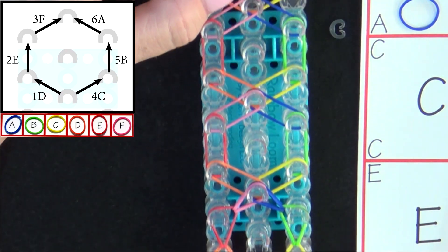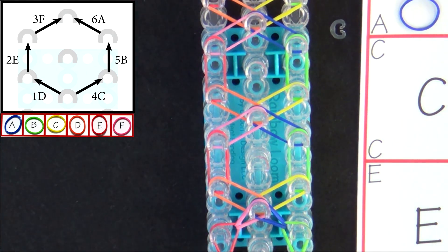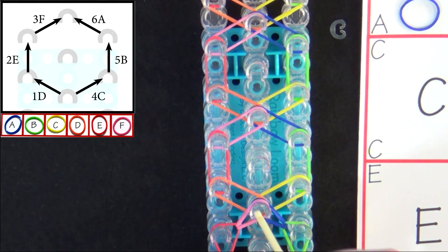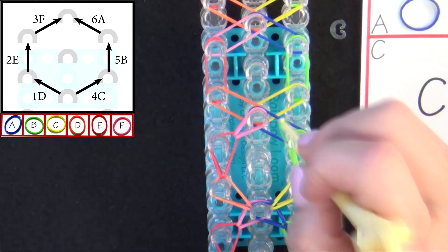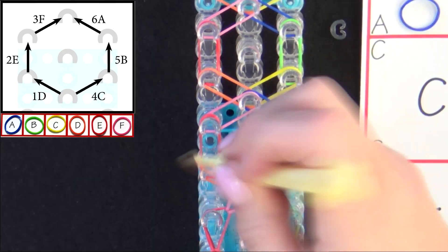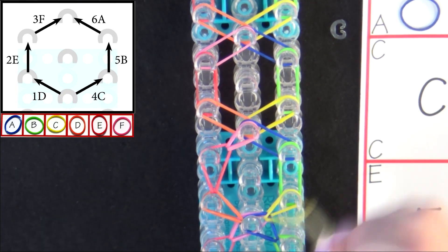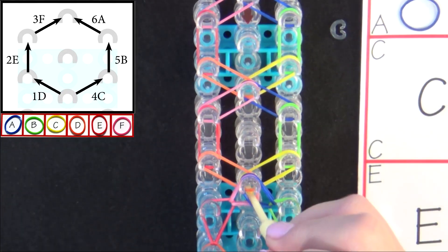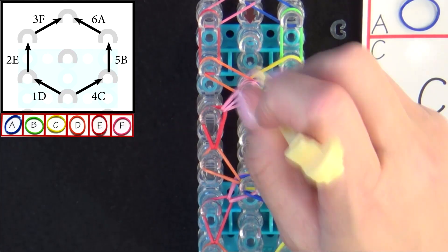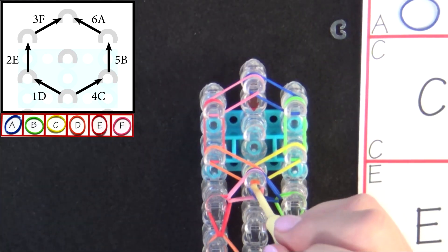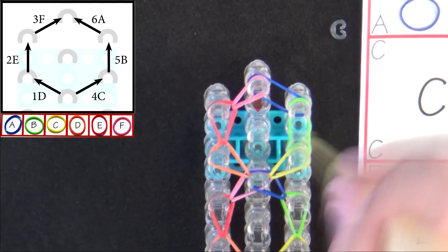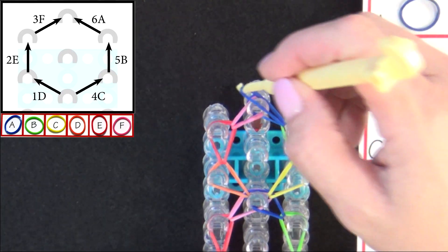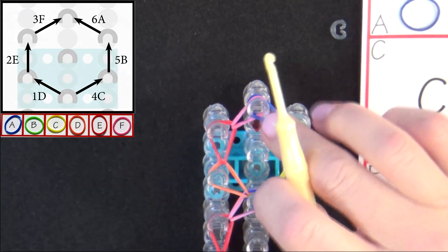We'll fast forward from here until we reach the end of the loom. You may want to pause the video here until you reach the end of the loom. And here we pull that last band into the center pin.